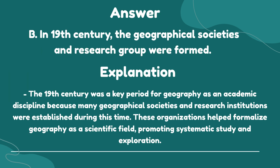The correct answer is B. In the 19th century, the geographical societies and research groups were formed. Explanation: The 19th century was a key period for geography as an academic discipline because many geographical societies and research institutions were established during this time. These organizations helped formalize geography as a scientific field, promoting systematic study and exploration.